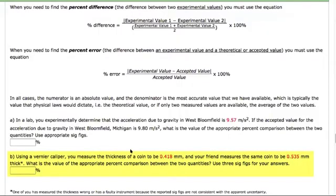Now, for this one, using a vernier caliper, which is a measuring tool, we measure this as the thickness of the coin. Your friend measures it to be that thickness. So my question is,